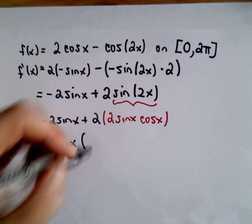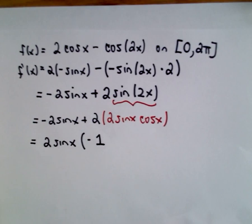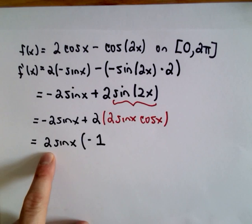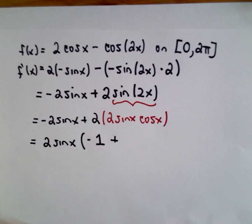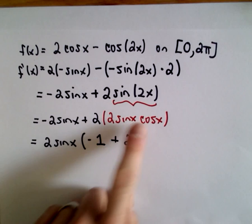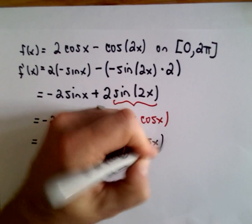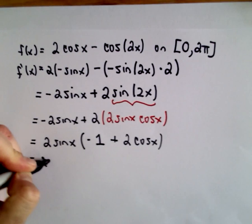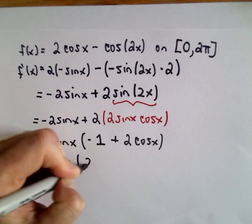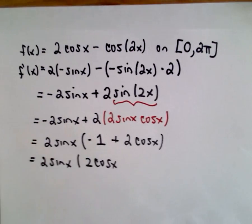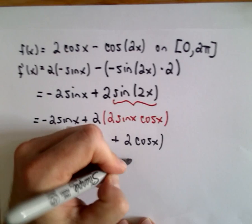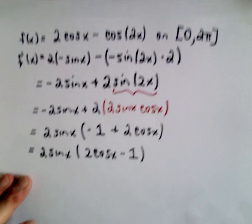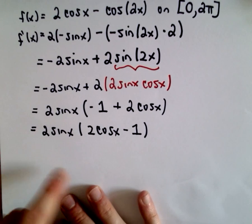To get the first term back, I just need to multiply by negative 1. So negative 1 multiplied by 2 sine x will give me my negative 2 sine x. We factored out a positive 2, and we're still going to need another 2 and the cosine x term. I'm going to rewrite the stuff in the parentheses as 2 cosine x minus 1. So we're doing this on the interval 0 to 2pi, and we have to set each factor equal to 0.